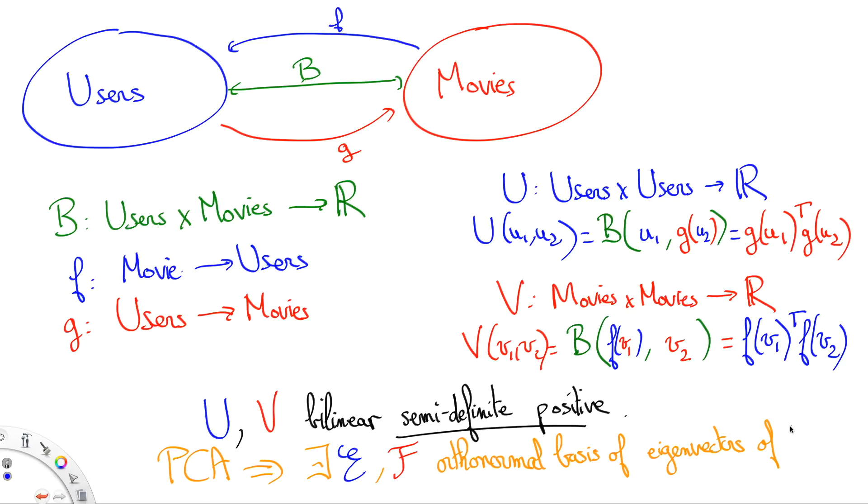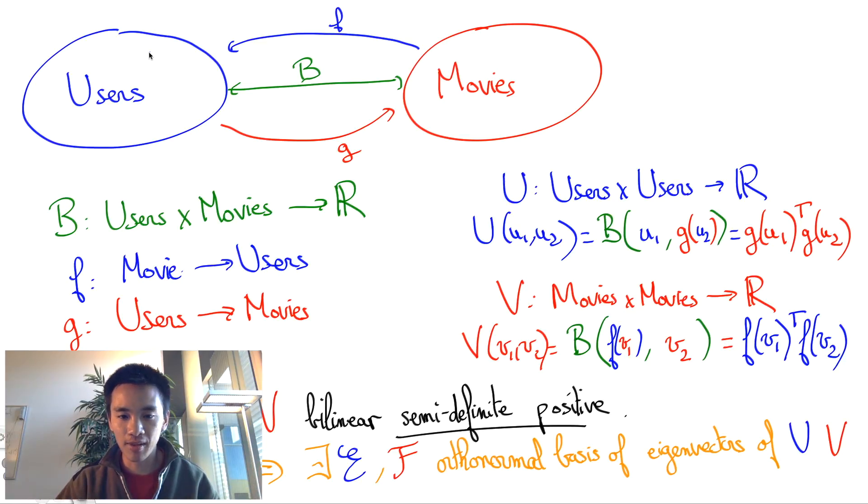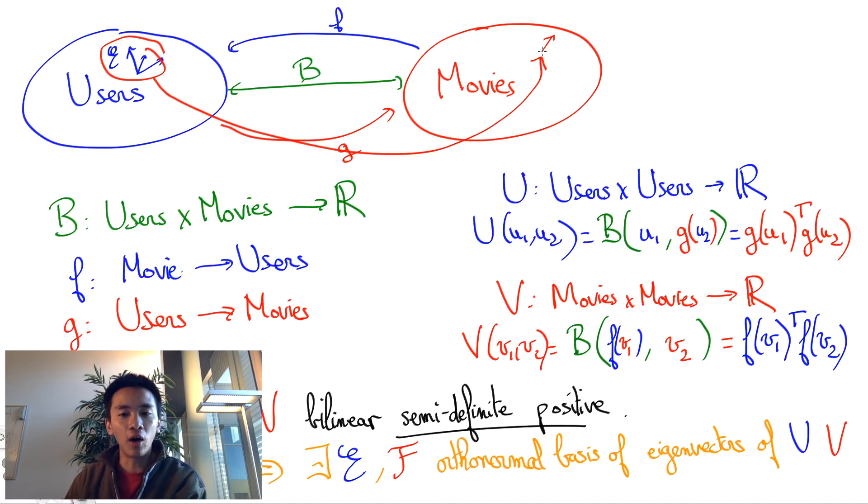We need these two orthonormal bases to be compatible with one another and in general it's not going to be the case. So, one thing we can do is to take an orthonormal basis of the user space and then use the G function to compute the corresponding orthonormal bases in the movie space.